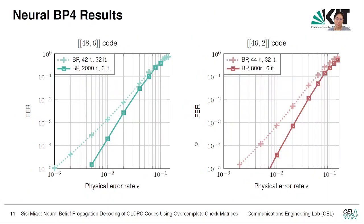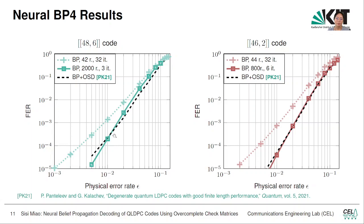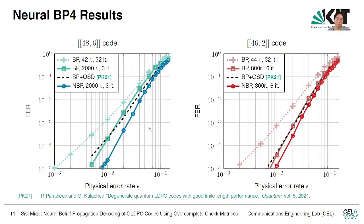Now let's look at the neural BP4 decoding results. These are the two small codes that I showed earlier with the plain BP4 decoder with the original BP4 and the overcomplete. Here we can see this is the BP serial BP plus ordered statistic decoding as post-processing. If we use overcomplete check matrices, they perform similarly, but we have the advantage that we can finish the decoding in a very small number of iterations. Then we can apply training based on the BP over the overcomplete check matrix. We can see that we can still get another good decoding gain. It is interesting that after training we actually also see that the weights for the low-weight checks are bigger than the weights for the high-weight checks, which matches our expectation.